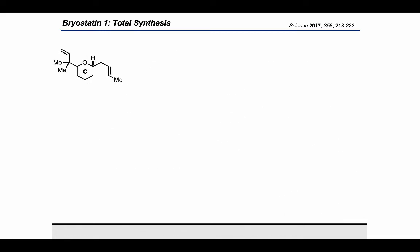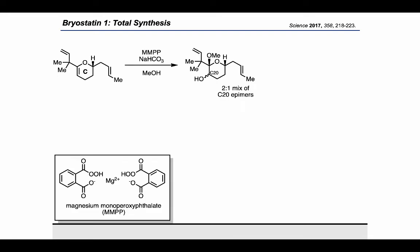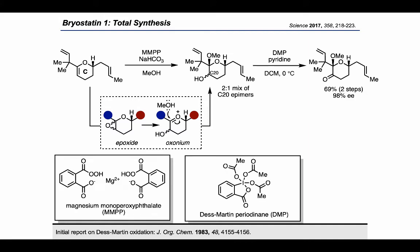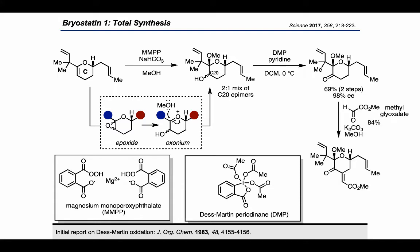Treating this enantioenriched, disubstituted dihydropyran intermediate with magnesium monoperoxyphthalate (MMPP) in methanol resulted in the formation of a hydroxymethyl ketal. The mechanism is presumably epoxide formation by MMPP, followed by generation of an oxonium ion that is diastereoselectively trapped by methanol as a nucleophile. Subsequent oxidation by Dess-Martin periodinane provided a ketone — the first step requiring chromatographic purification. That ketone was treated with potassium carbonate and methyl glyoxalate in a condensation reaction, resulting in selective formation of the E-enoate.